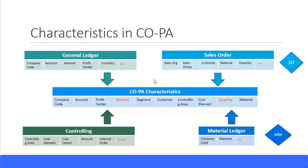In costing based COPA we report using characteristics and value fields. Characteristics are the fields which you take out from other modules. For example, from General Ledger you can pull out information like company code and profit center. From the Controlling module you can pull out cost center and internal orders. From the SD module you can pull out sales order, customer, and sales group. From the material ledger you can pull out material, material group, and product hierarchies.